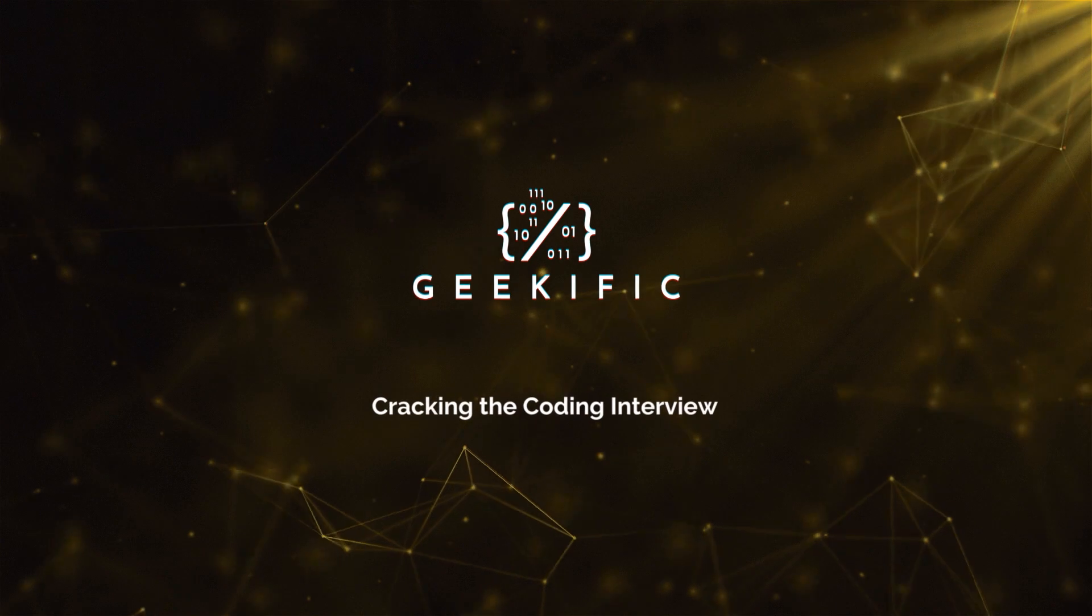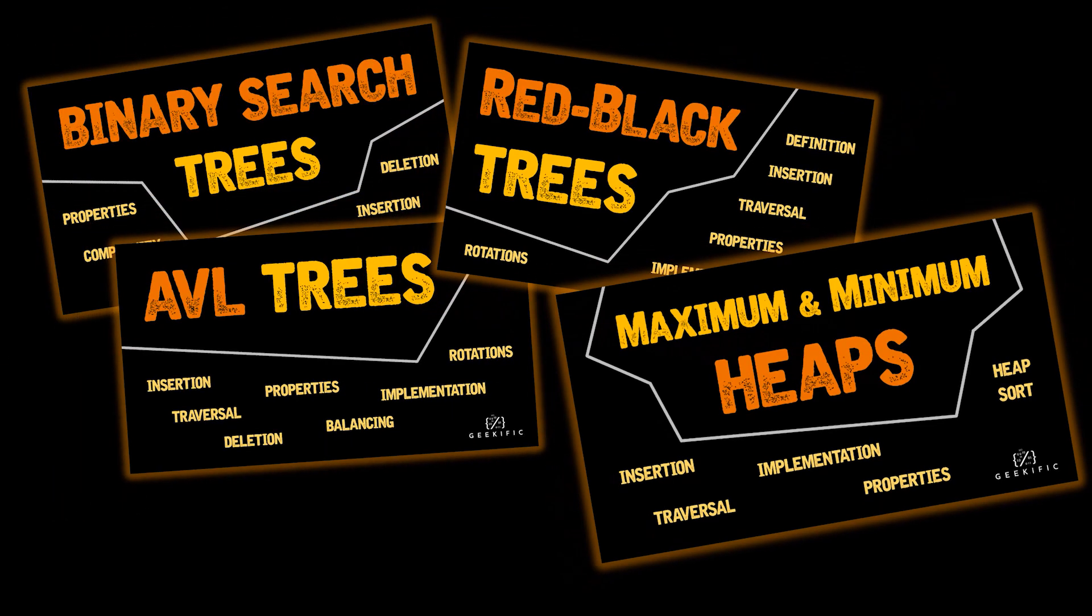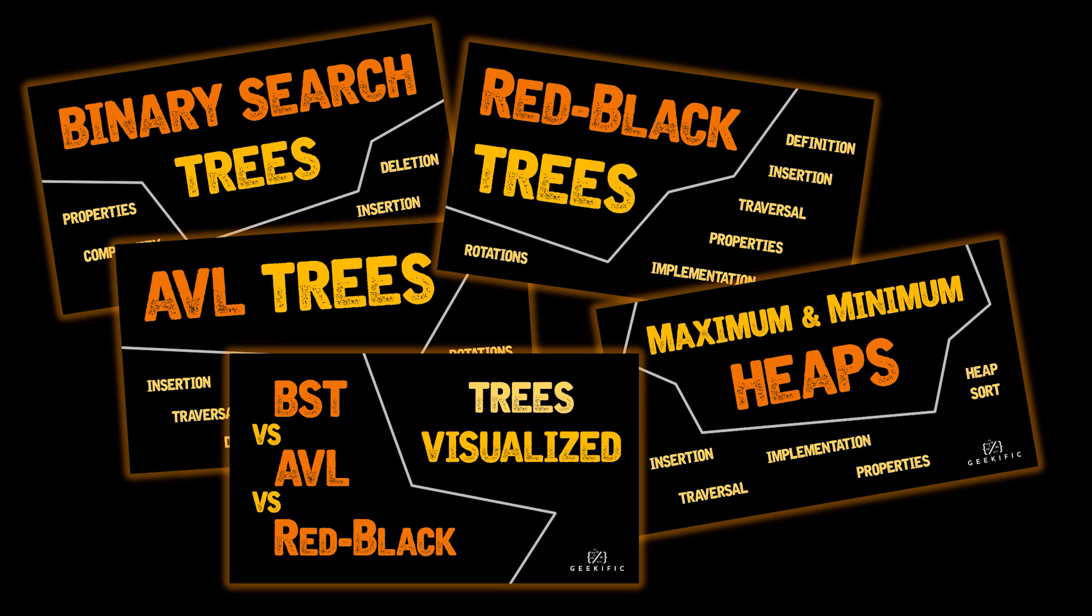What's up geeks and welcome to the channel. In our tree series we discussed and implemented binary trees in depth. We also explained the difference between BSTs, AVL trees, red-black trees, and many other tree types. The link to this series can be found in the card above. Now the reason I'm telling you this is because today's problem revolves around one particular property that helped us distinguish between these tree types.